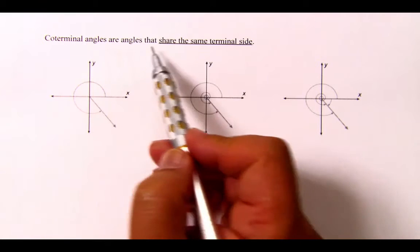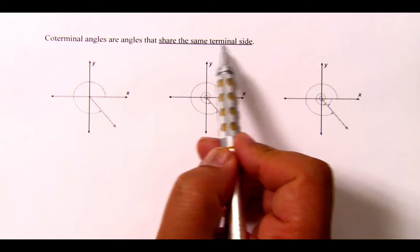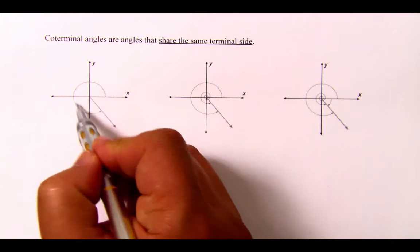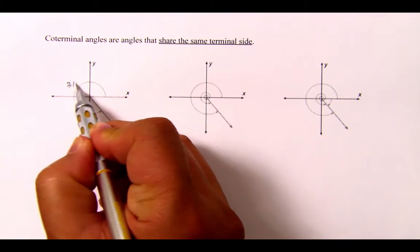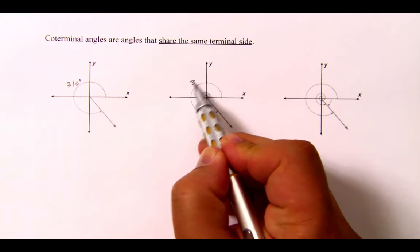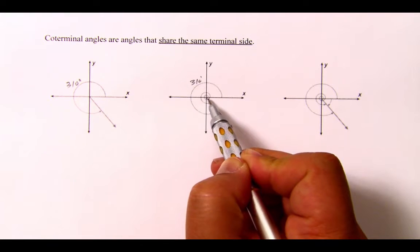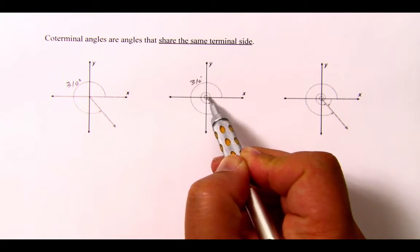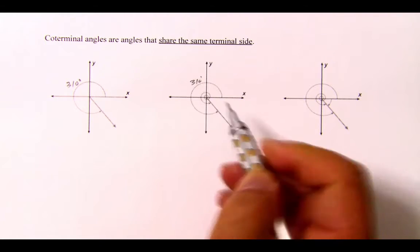Co-terminal angles are angles that share the same terminal side. For example, let's say this is 310 degrees. So that right here is 310 degrees. But if you notice the smaller one over here, it went full turn, came back around to the same terminal side.